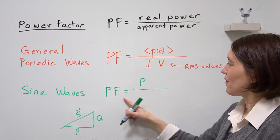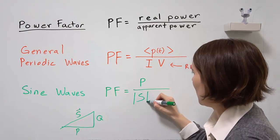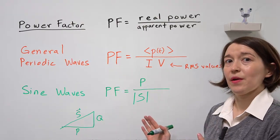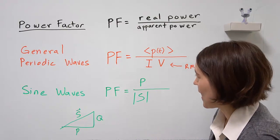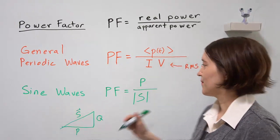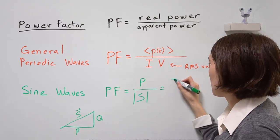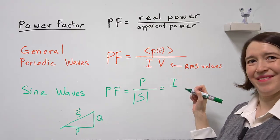Here's the equation: power factor is equal to the power over the magnitude of our apparent power. And if we go through and we calculate that for sine waves, we will find that power becomes the RMS voltage, the RMS current times RMS voltage times the cosine of the phase shift between the voltage and the current.